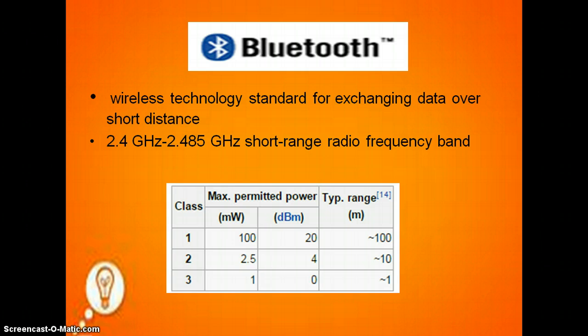Class one is 100 mW and 20 dBm maximum power, with a typical range of around 100 meters. Class two is 2.5 mW and 4 dBm maximum power, with a typical range of around 10 meters. Class three is 1 mW and 0 dBm maximum power, with a typical range of around 1 meter.